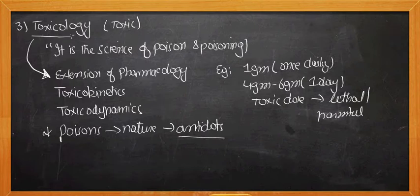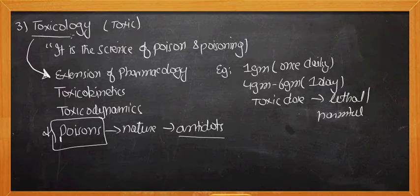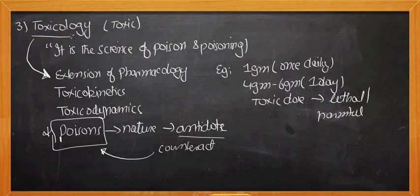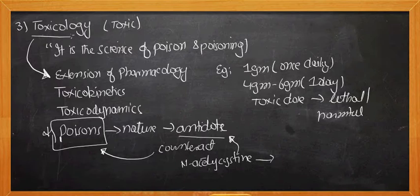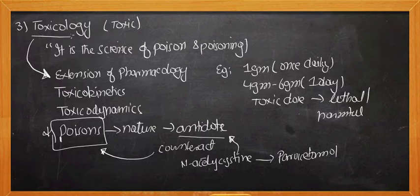Antidotes are substances used to counter the effects of poison. For example, N-acetyl cysteine is the antidote for paracetamol poisoning. This means if a toxic dose of paracetamol has been ingested by any patient or individual, N-acetyl cysteine is the antidote. I hope it makes sense.